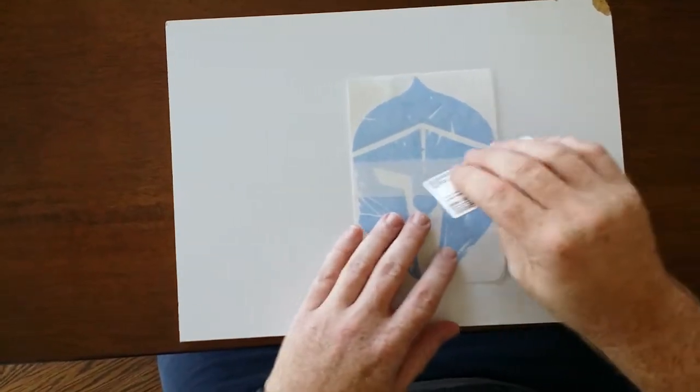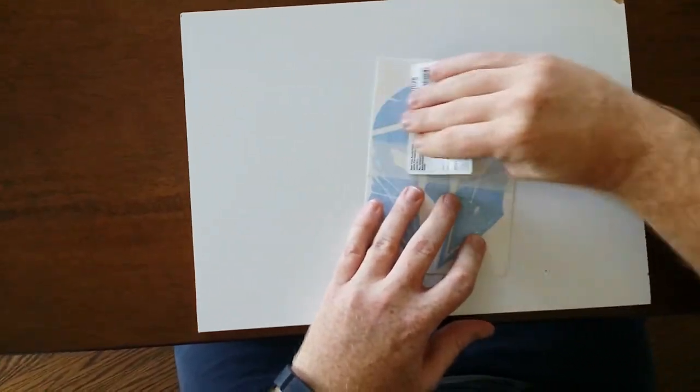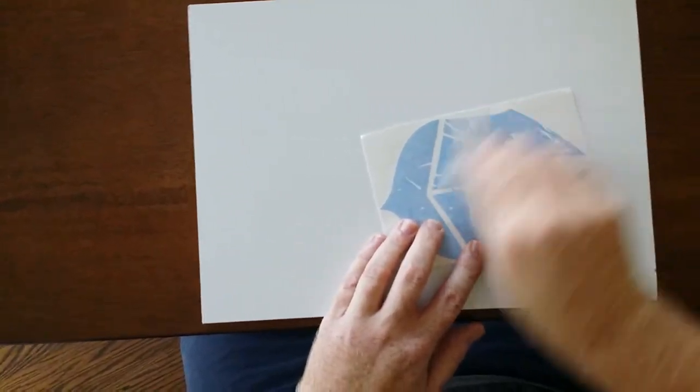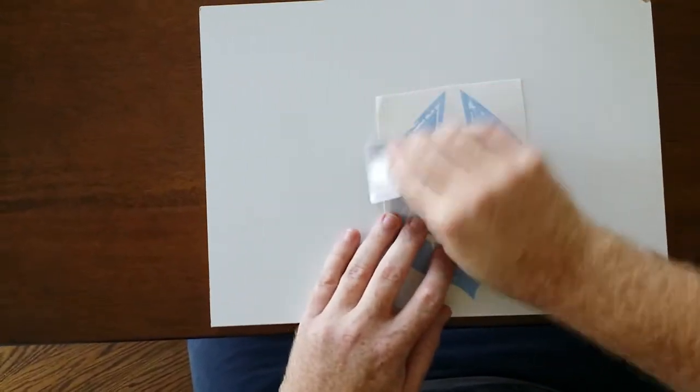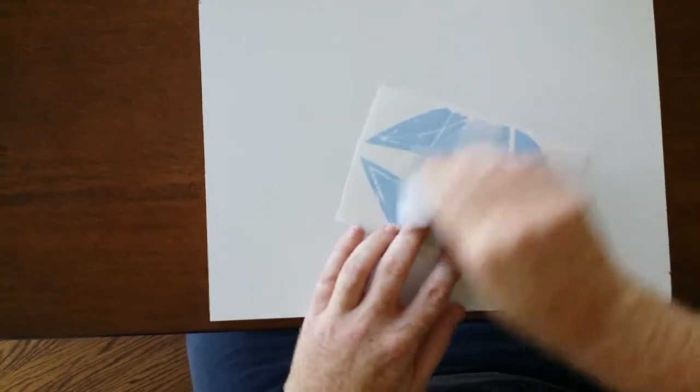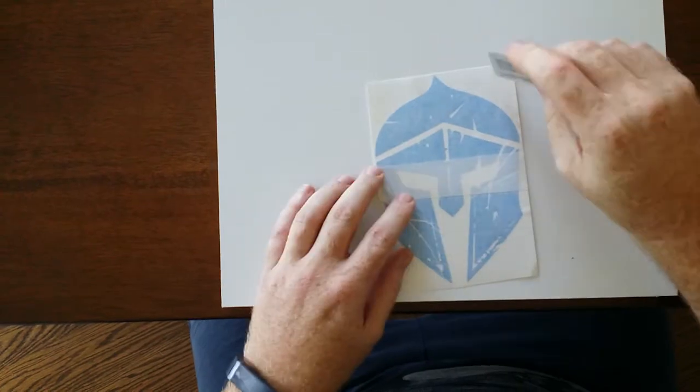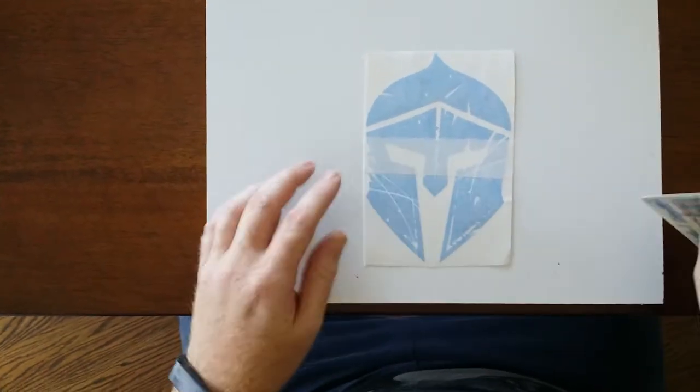The first step before you apply anything is to rub. Using a license or a credit card, rub the white part of the sticker first just to make sure that the white part is fully adhered to the vinyl.